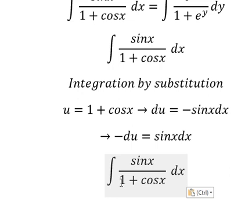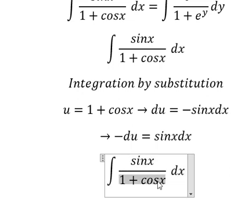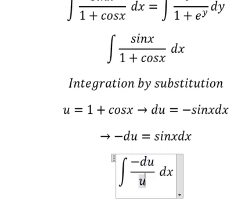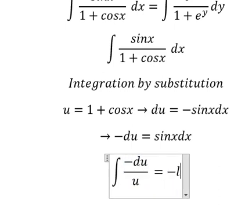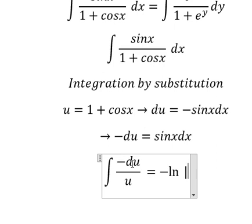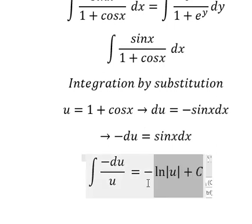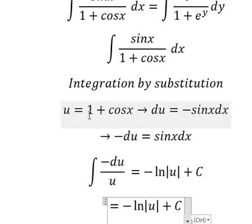So this one we change for u, and sine x dx we change for negative du. The integration of this one we have: u equals one plus cosine x.